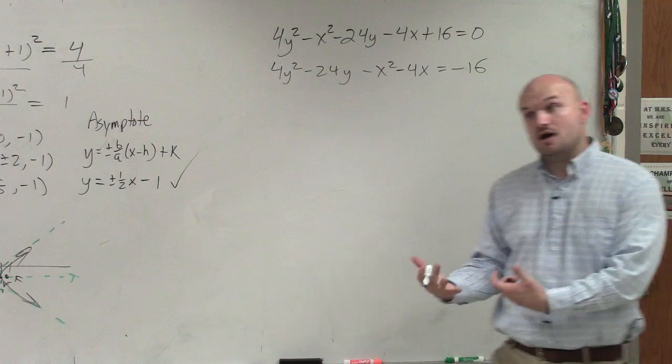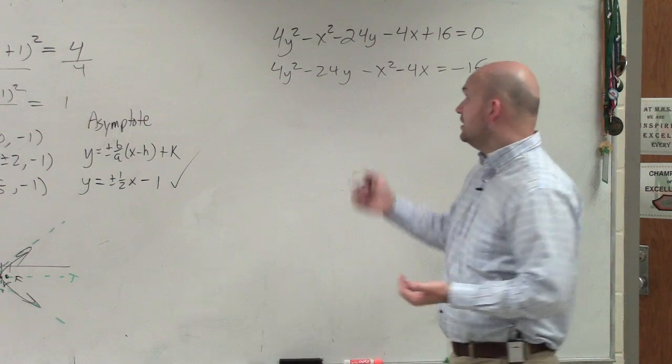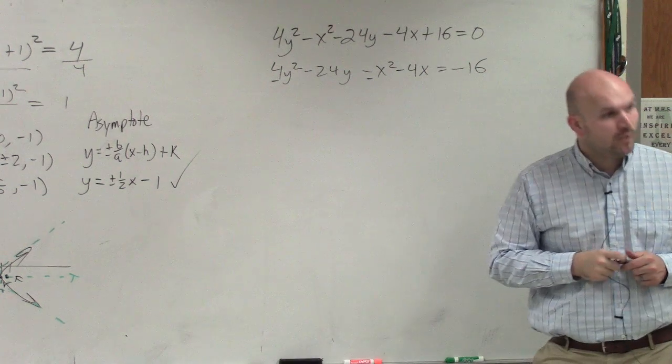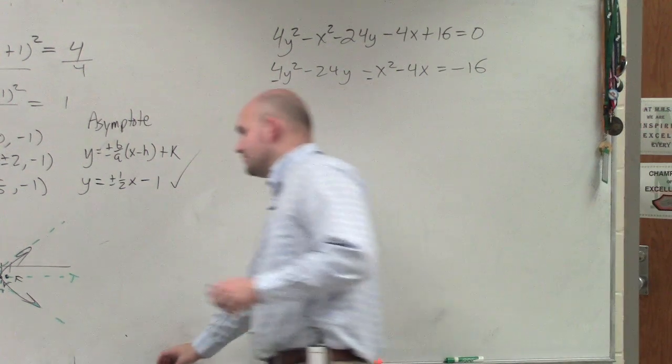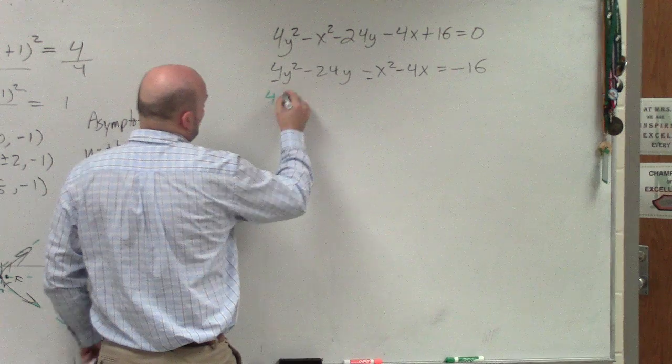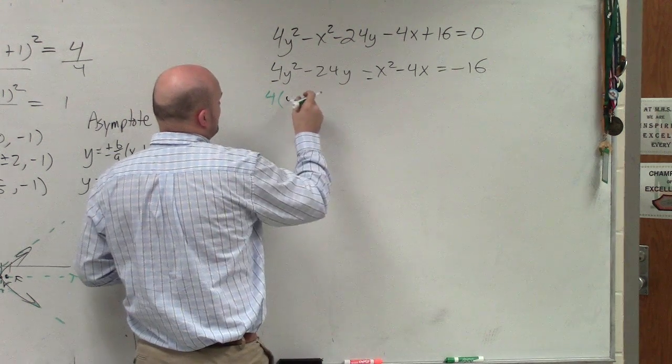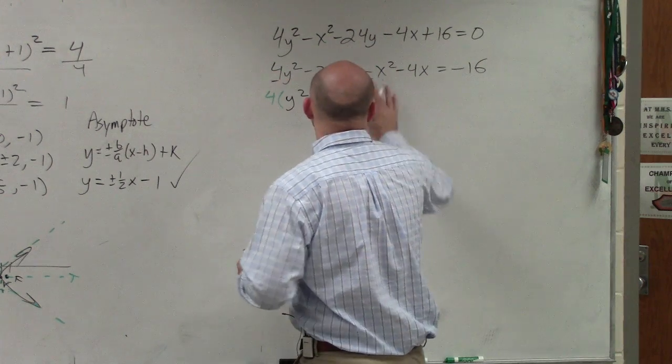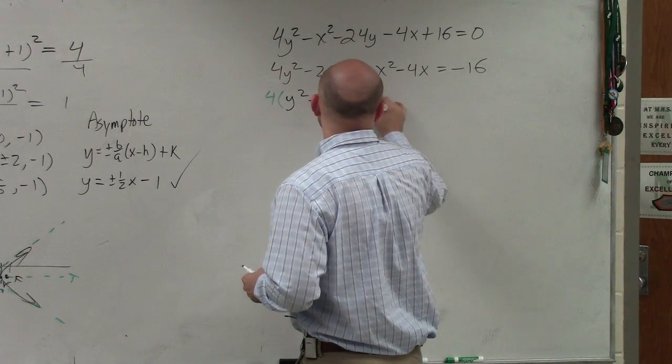But then we recognize, we say, oh, remember we can't complete the square unless our coefficients are equal to a positive 1. So what we have to do is factor out a 4 out of this one, and factor out a negative 1 out of this one.